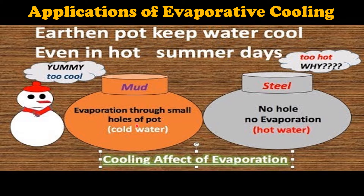Reason: Clay pots have very tiny tiny holes. So evaporation takes place through those small holes of the pot. The water molecules, to evaporate, take heat from the water inside the clay pot and some heat from the surrounding. Whereas steel does not have such small holes, so the phenomenon of evaporation does not occur in steel vessels.